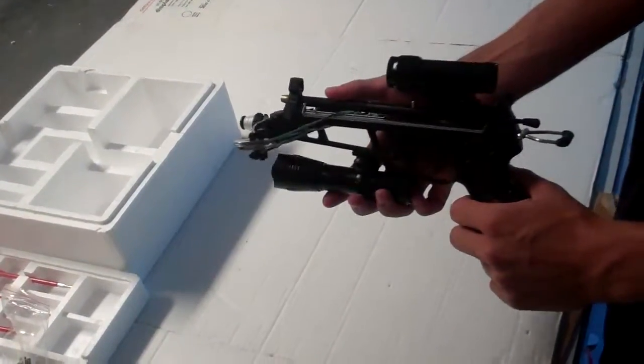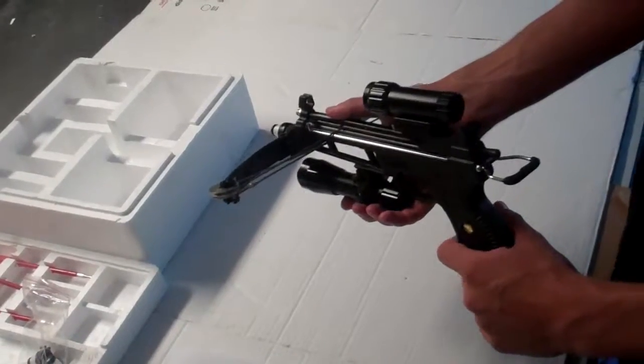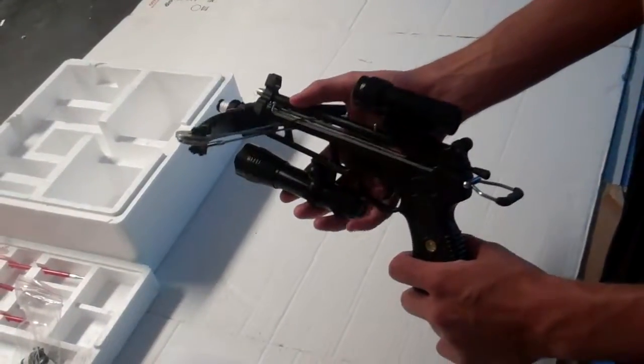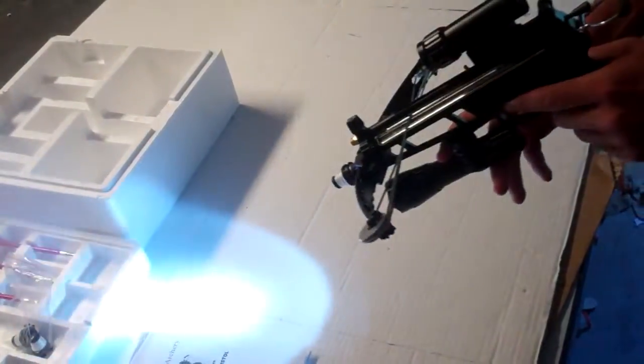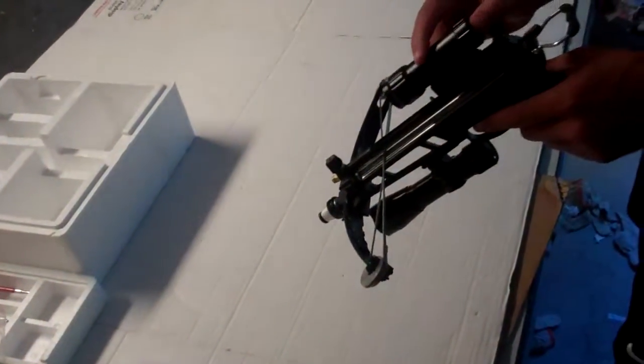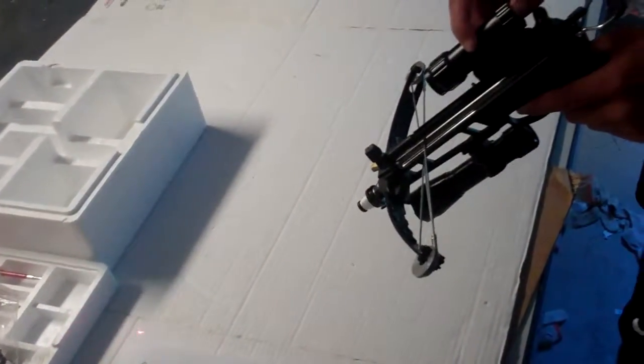They sell it with no attachments, or you can get a tactical version with the attachments, but I got the attachments off my Mantis. You can get the tactical light, or you also have the laser sight, as you can see right there.